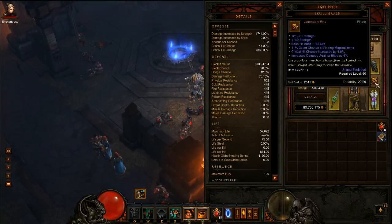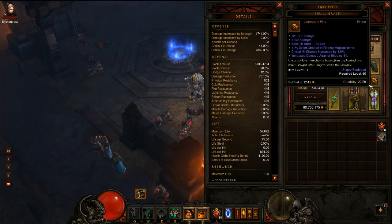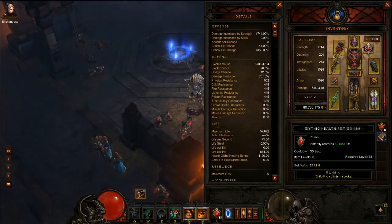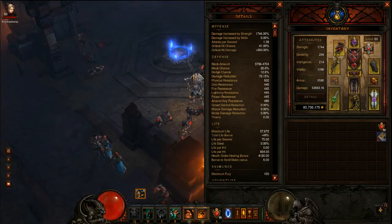I also have 6% Attack Speed from this Ring and this Amulet, and this Skull Grasp is also giving me plus 21 to 38 damage. So now let me do a demonstration here of the calculation, how it works. So let me get a new graphic, and remember the damage on my screen, 53,683.18.